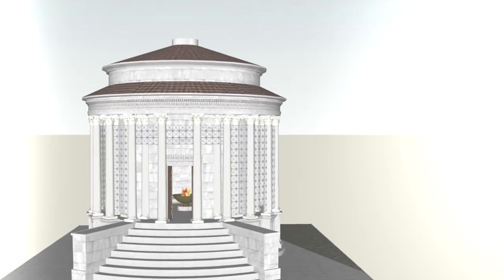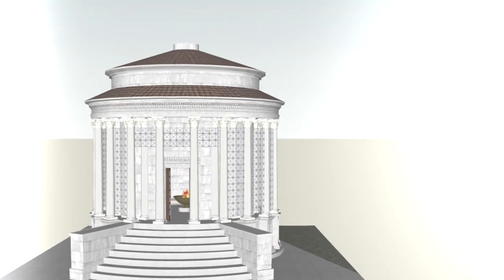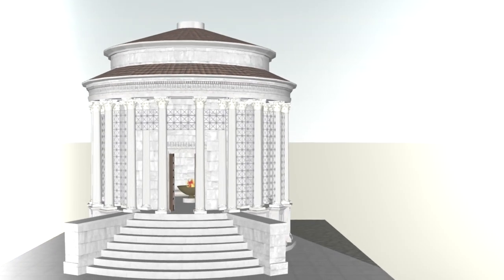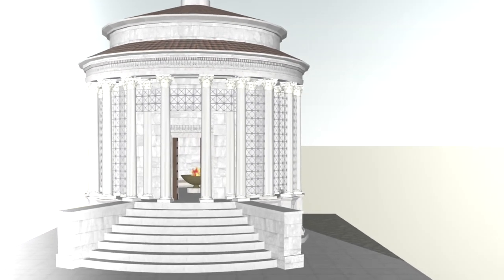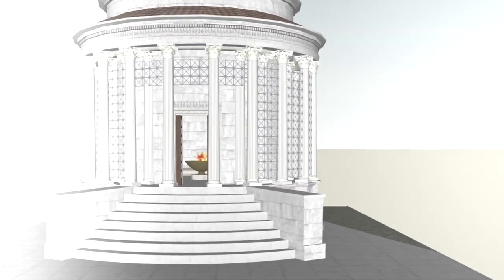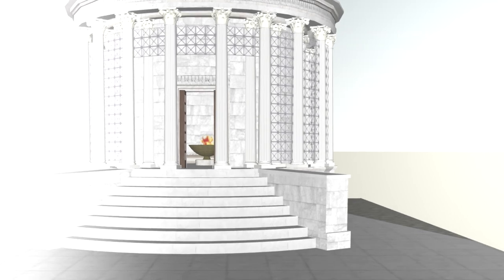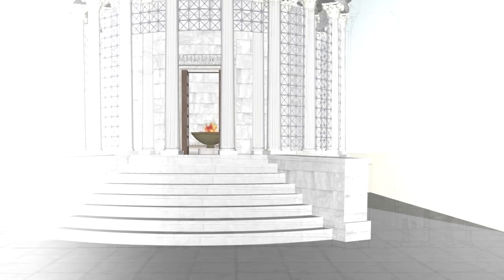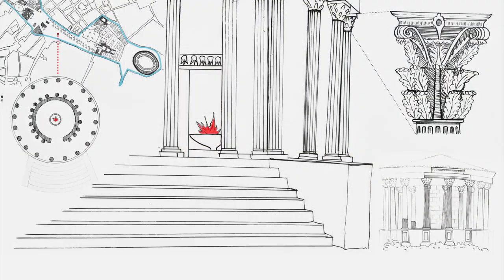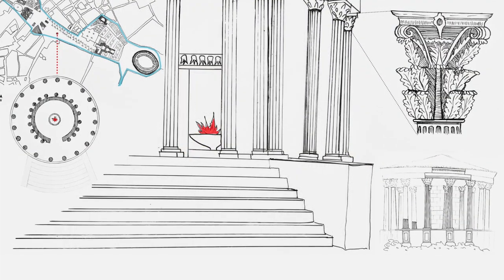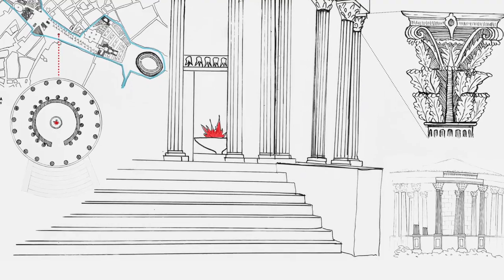I am interested in the history the Temple of Vesta carries and the symbolism of the fire as the life of the city of Rome. If the sacred fire accidentally went out, it was regarded as a bad omen.